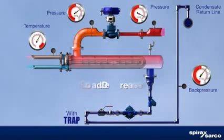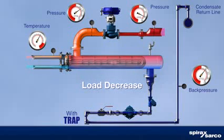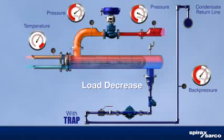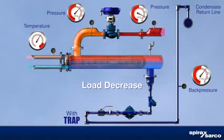Under reduced heating load, the control valve throttles down, reducing the steam pressure inside the heat exchanger. This also reduces the differential pressure across the steam trap, making the trap unable to remove the condensate.